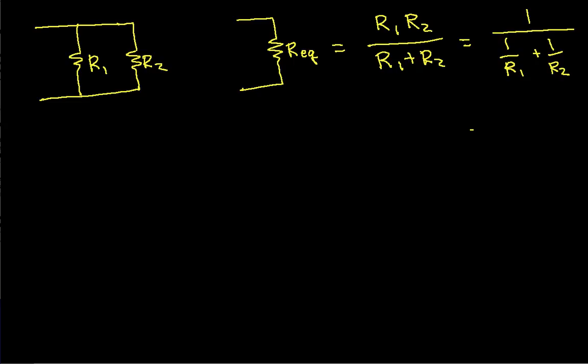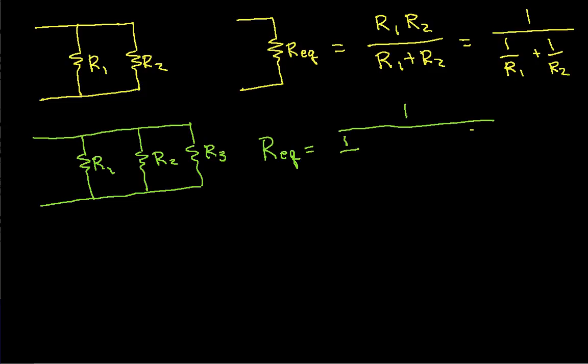Suppose that we have three resistors in parallel. R1, r2, and r3, okay? The equivalent resistance here is given by 1 over 1 over r1 plus 1 over r2 plus 1 over r3. Okay, and that's not that hard to compute.